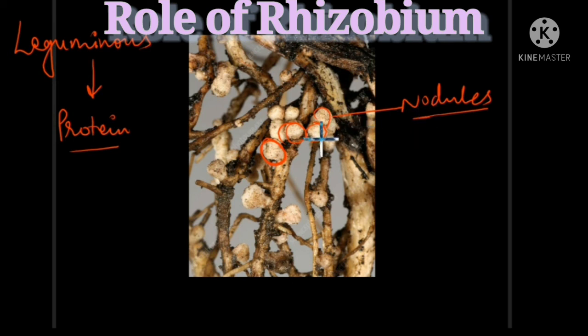These nodules give shelter to Rhizobium. The Rhizobium bacterium lives in the nodules of these plants and converts atmospheric nitrogen into a usable form. In this way, a symbiotic relationship is seen in these plants and bacteria. The bacteria fix nitrogen for the plants, and in turn, the plants give shelter to the bacteria.